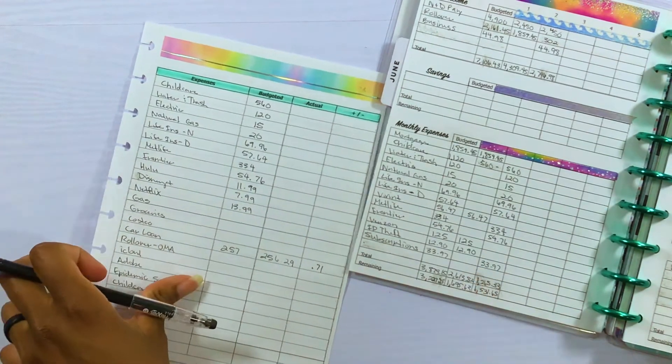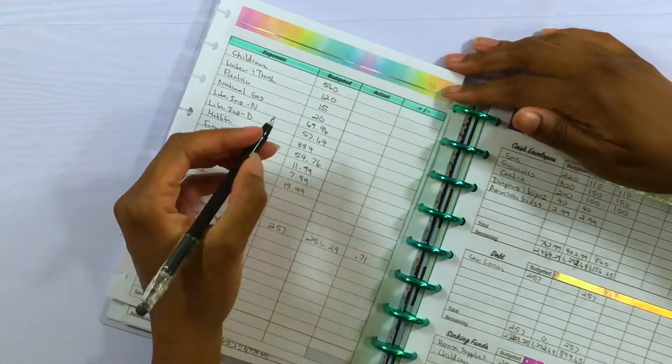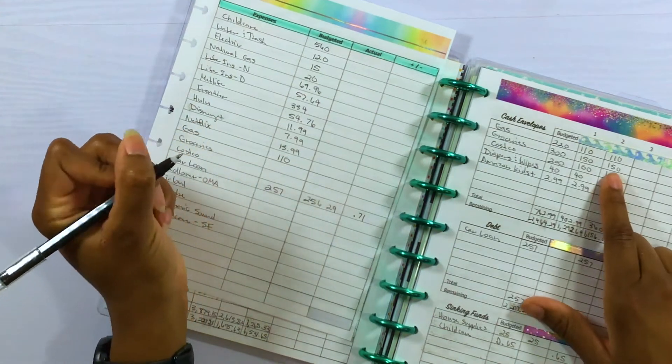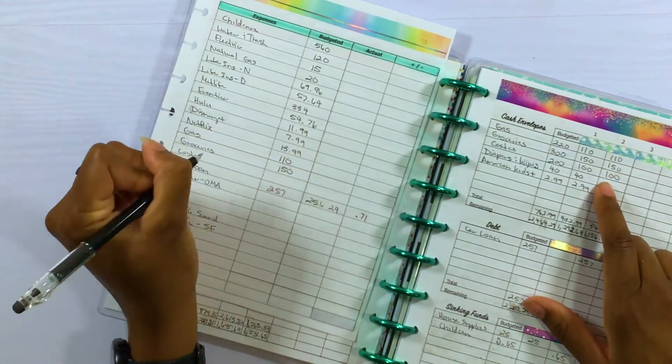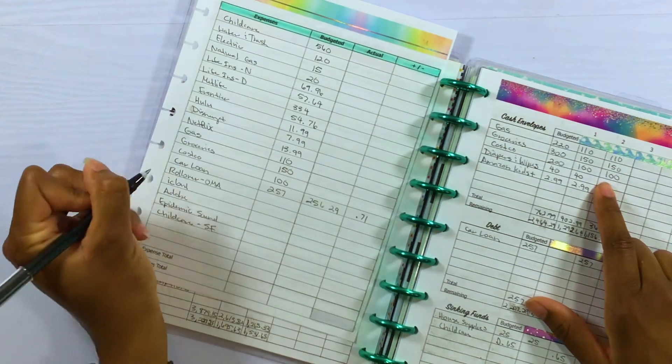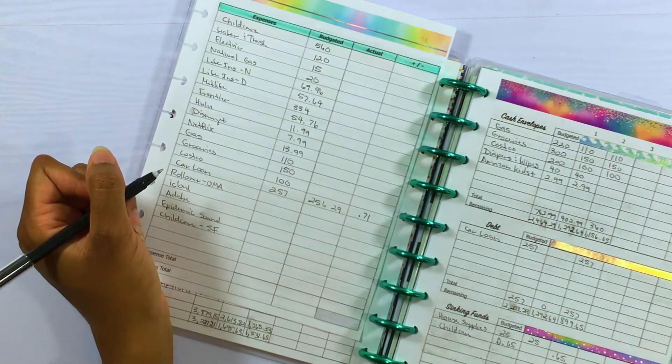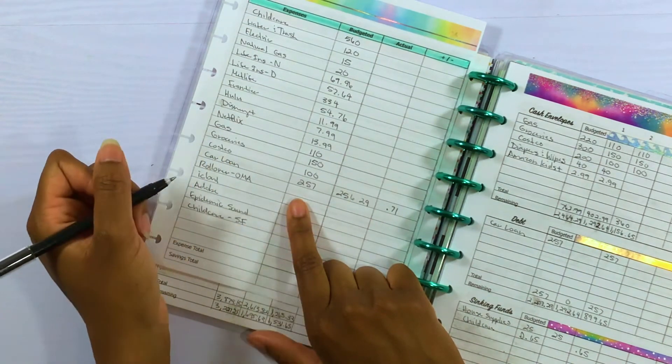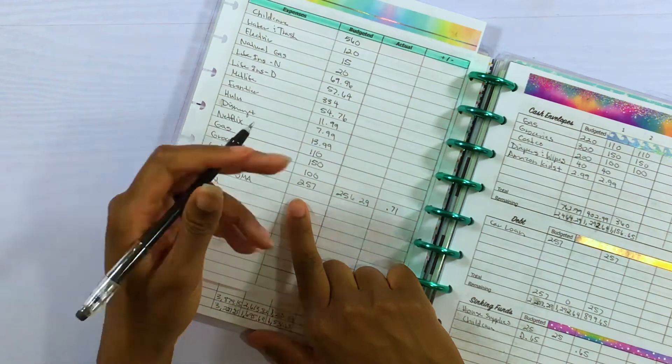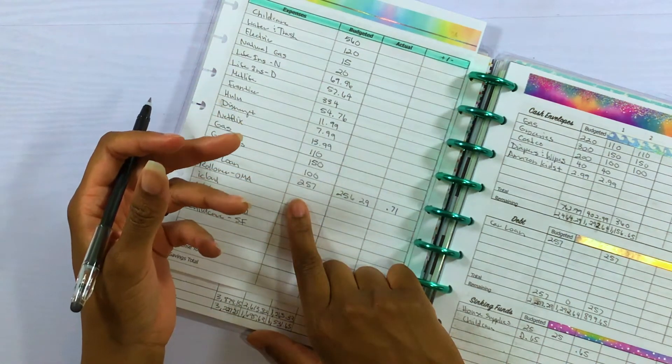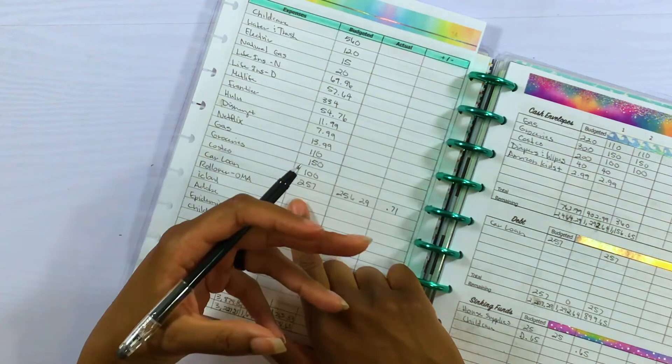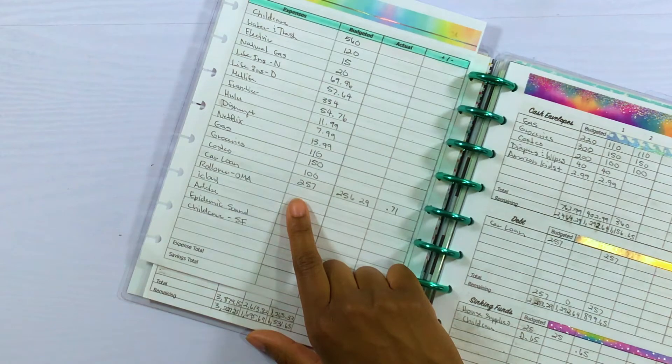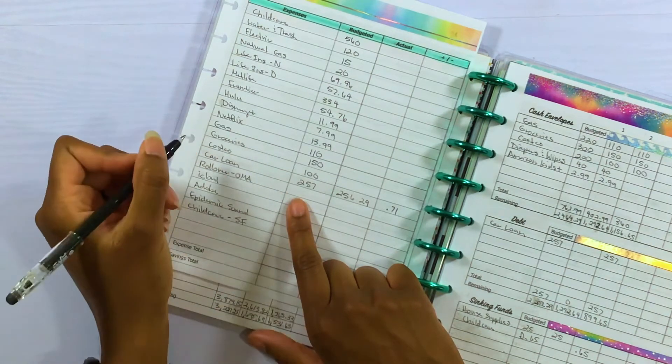Subscriptions is a total of $33.97 but I have it broken out here so I can track it individually. So this $33.97 is made up of Hulu which is $11.99, Disney Plus which is $7.99, and Netflix which is $13.99. So next is our cash envelopes. Gas we do $110, groceries we do $150, Costco we do $100, rollover, one month ahead is this time it's just going to be the mortgage which did go up starting for the month of July.